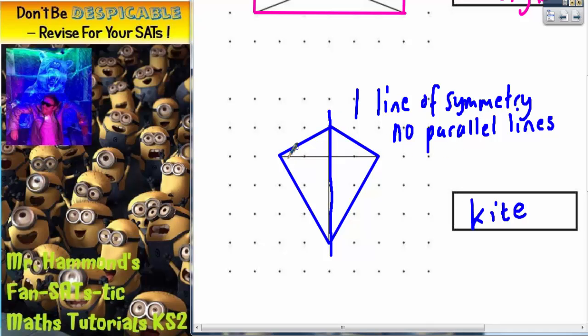Sometimes people think that opposite sides in the kite are parallel, but they aren't because they do actually go towards each other, so they can't be parallel.